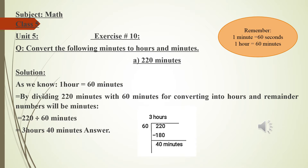In the rough work, I divided 220 by 60. 60 multiplied by 3 is 180. Subtracting: 220 minus 180 gives a remainder of 40 minutes. So the answer is 3 hours and 40 minutes.